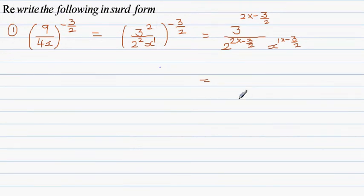2 times negative 3 halves - you should be able to do this without a calculator - is 2 over 1 times negative 3 over 2, which is negative 6 over 2. So this is 3 to the power negative 3.